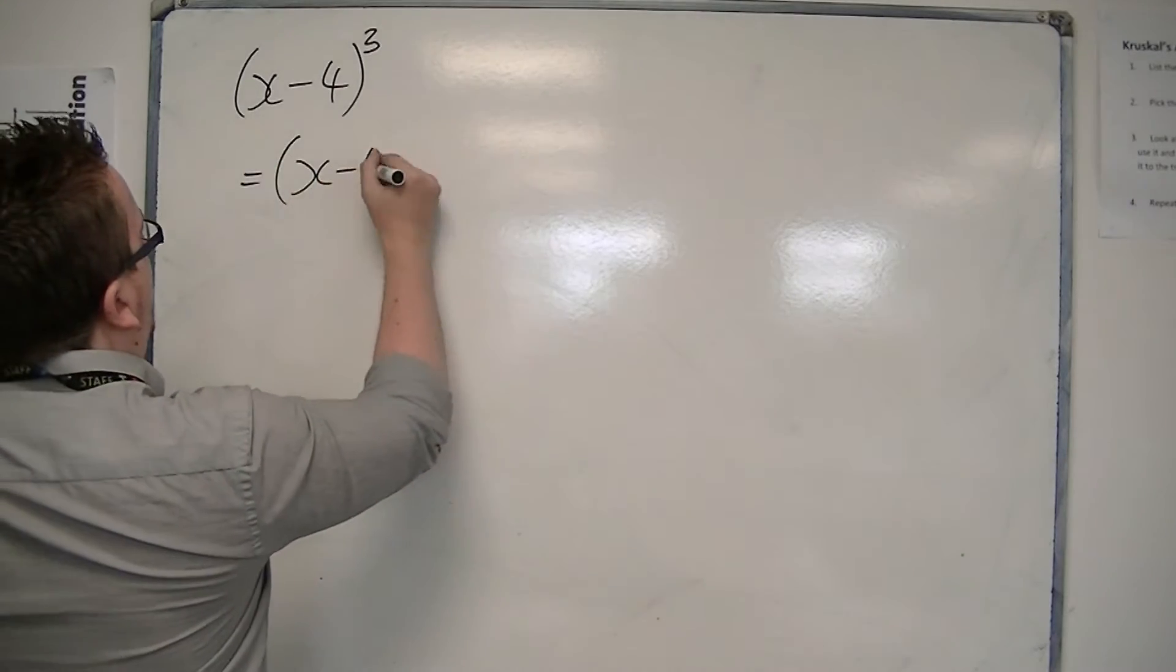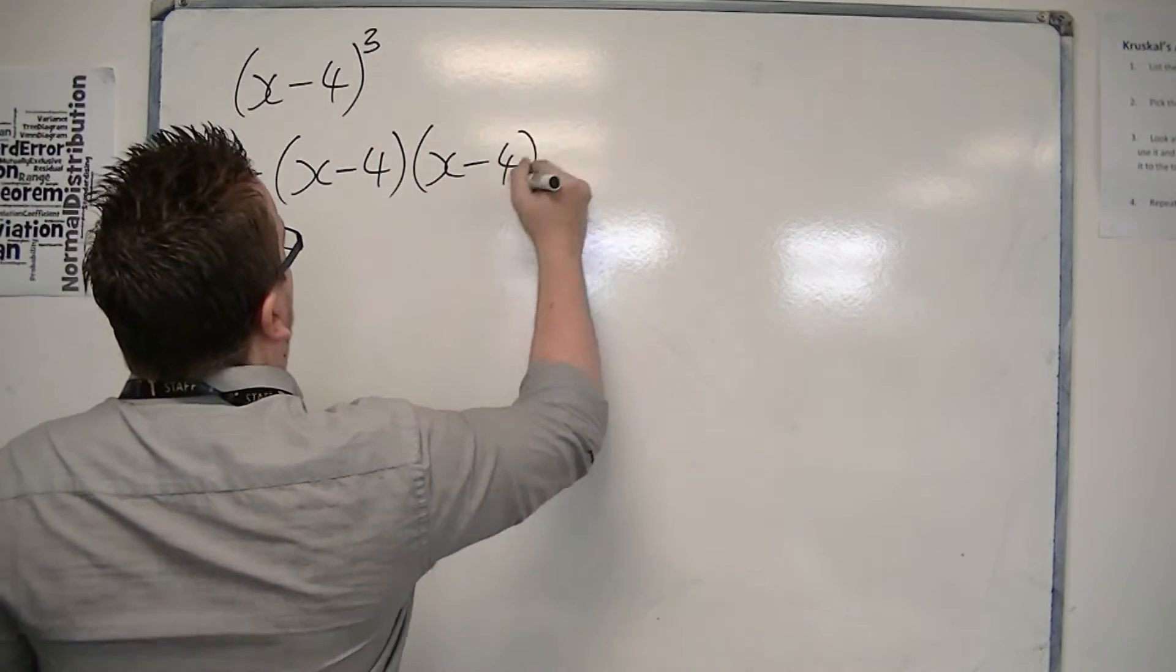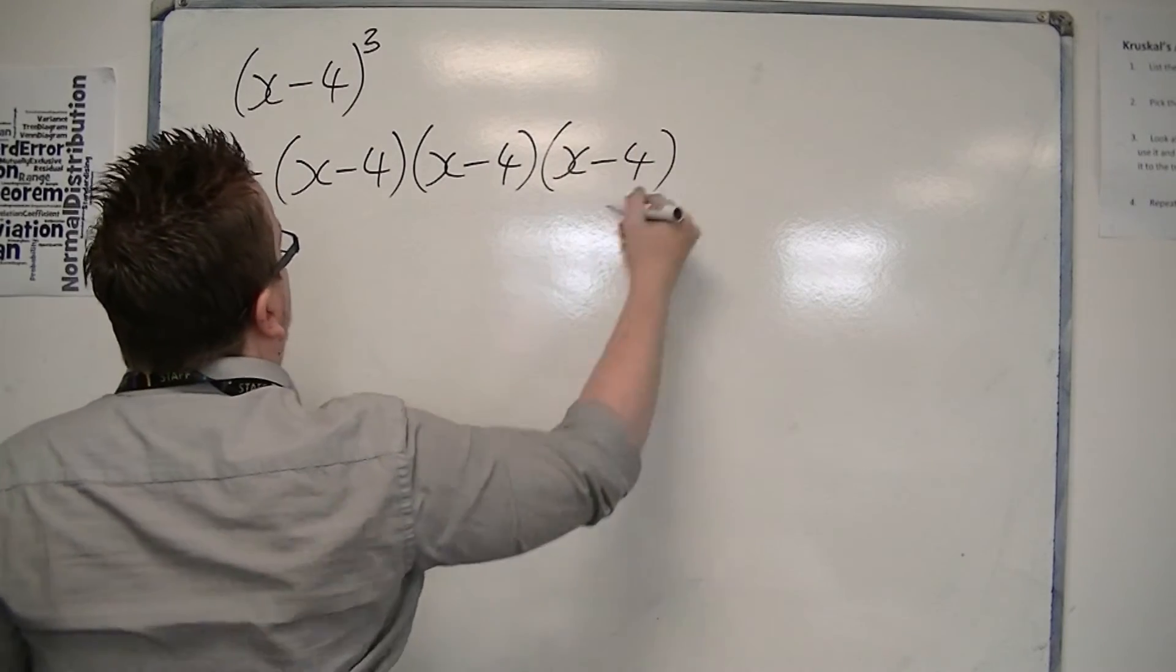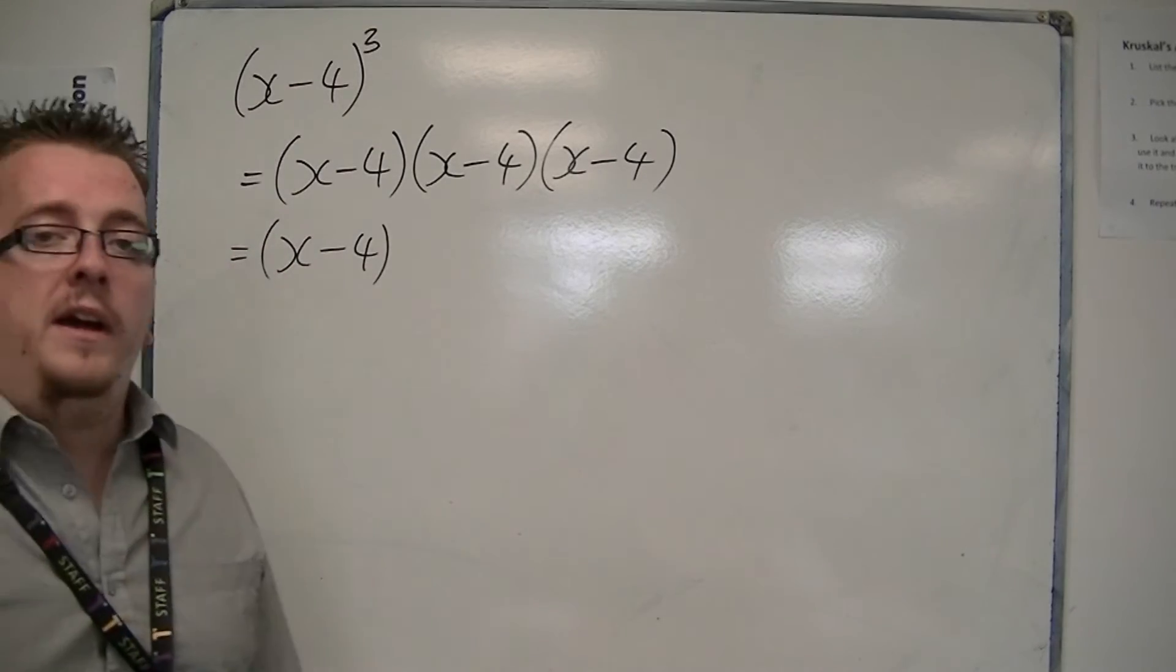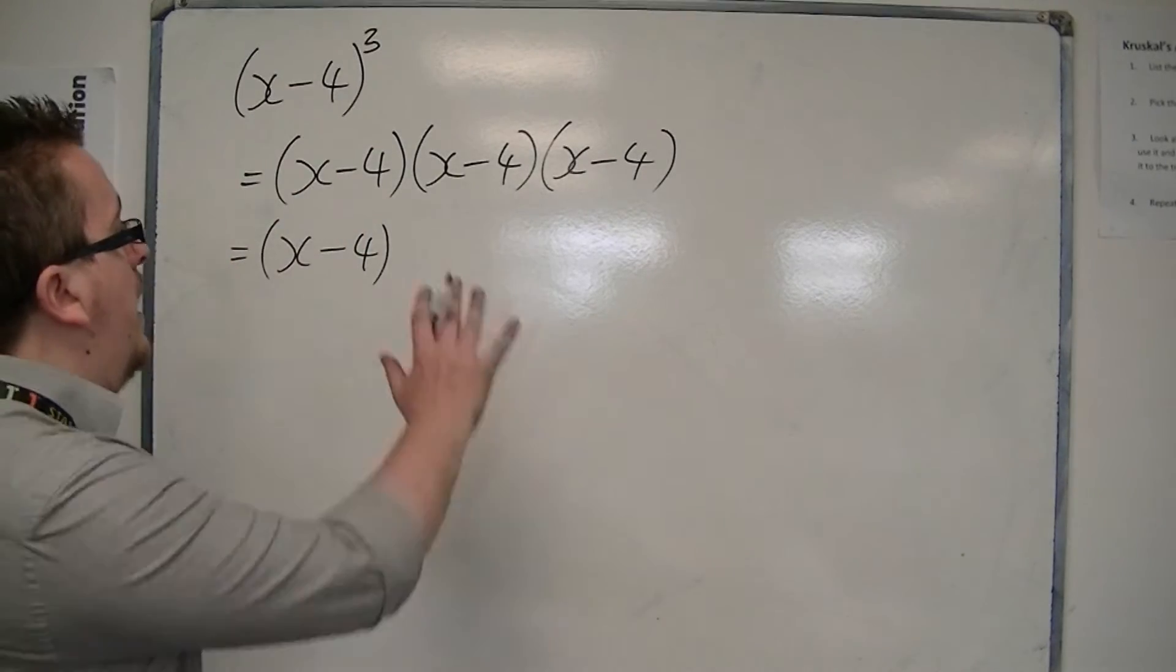So x minus 4, x minus 4, x minus 4. That's what we're looking at here. So leave one of them alone. I'm going to leave the first one alone and multiply out the other two brackets.